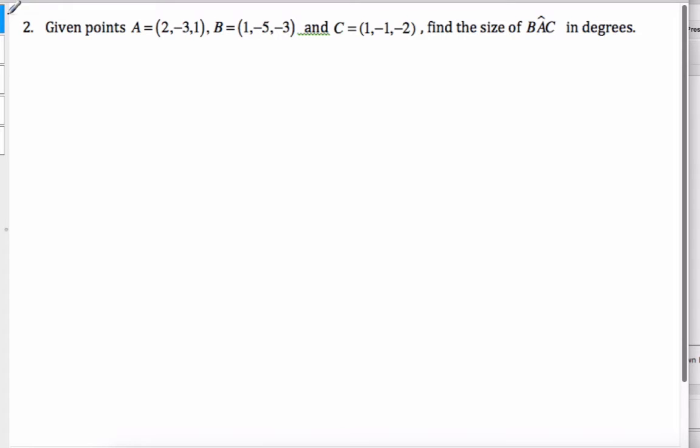Let's try an example here to demonstrate this. Given these points, find the size of angle BAC. If I want BAC, I want A to be the tail of both vectors. So I want to find vector AB and I'm also going to want vector AC.